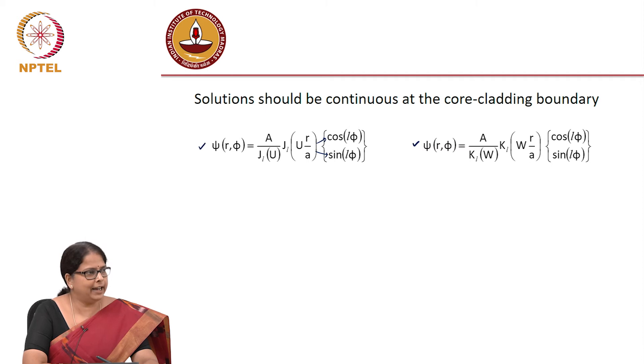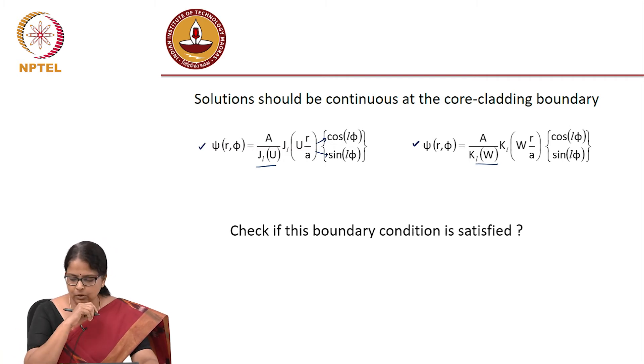So now you know why I had A J_L(u) and A K_L. If you did not have this, they will not be continuous. So the boundary condition is satisfied because we have fixed these constants. Of course, A is not known yet. So first boundary condition that the solutions must be continuous did not give us anything more. You are not able to find out the β. Idea was to find out the β. Once I have the β, I have everything else. So that did not give you anything else.